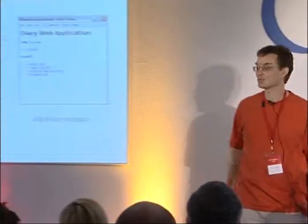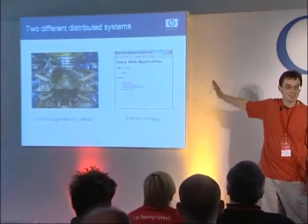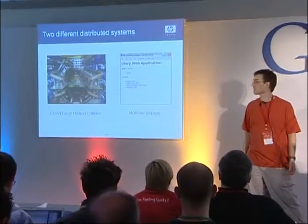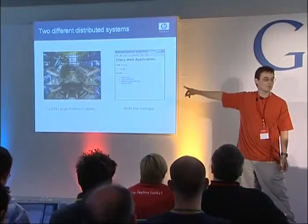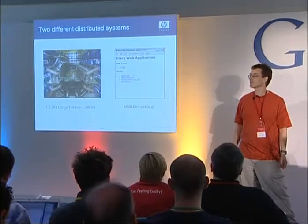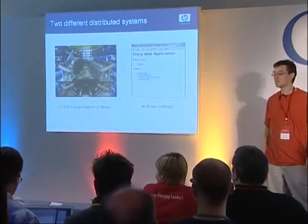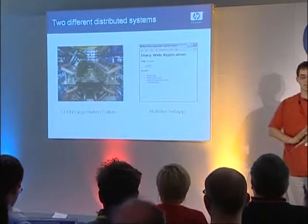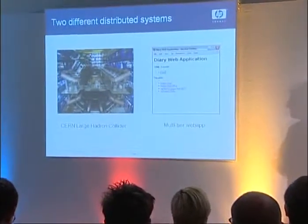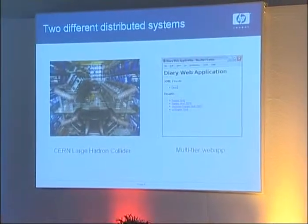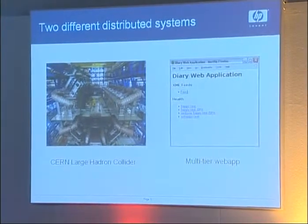We're going to start with: what is a distributed system? Here's two. On the left, CERN's Large Hadron Collider. On the right, a classic 3-tier web application. Hands up anyone who has the problem of bringing up the big thing on the left? You better get it right, because if you get it wrong, Geneva is going to cease to exist. The web application — well, we all have to deal with those.